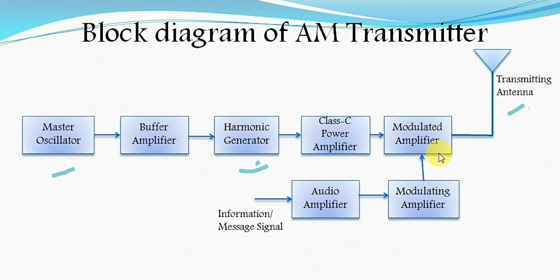The boosted message signal is then applied to the modulated amplifier, which uses a Class C tuned amplifier circuit, usually of push-pull type. It is modulated by the audio modulating voltage from the modulating amplifier combined with the constant high frequency carrier signal from the Class C power amplifier output. After modulation, the high power modulated signal is passed through the transmitting antenna, generating radio waves to transmit through the channel.